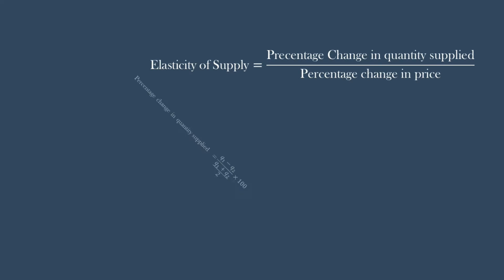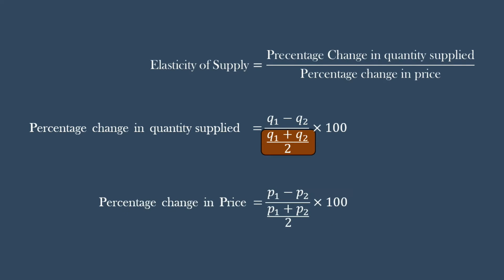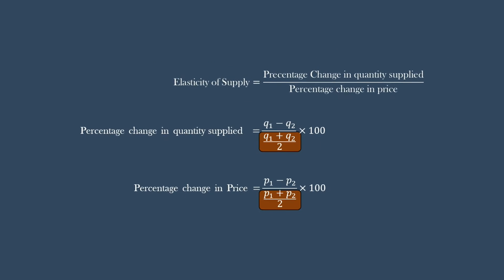To calculate the percentage change in quantity, we use the average of the two quantities and not the initial quantity. Similarly, in calculating percentage change in price, we use average of the two prices and not the initial price.